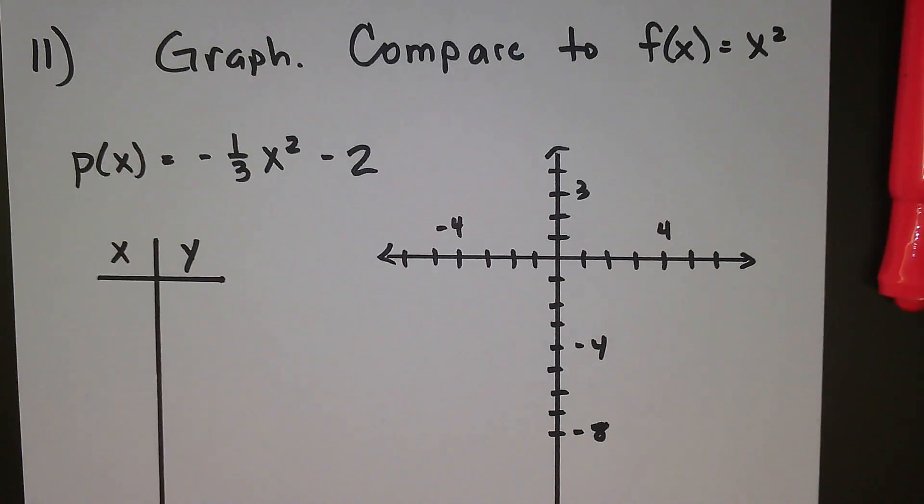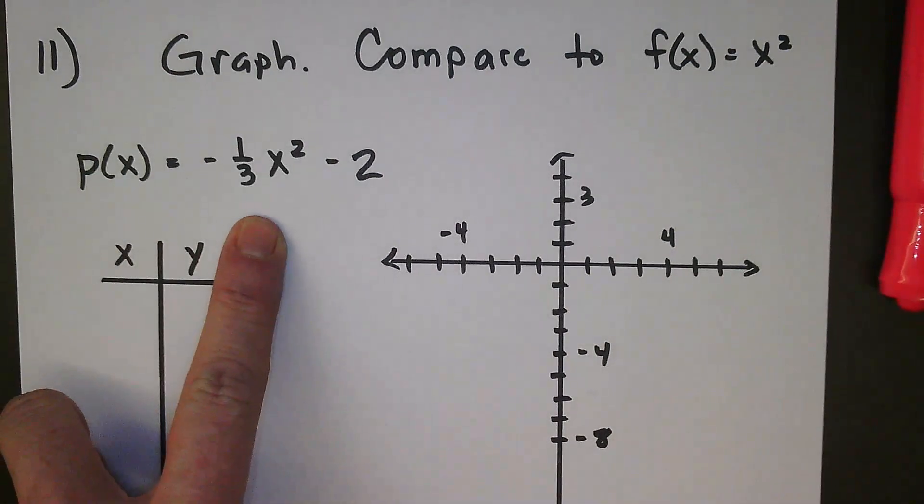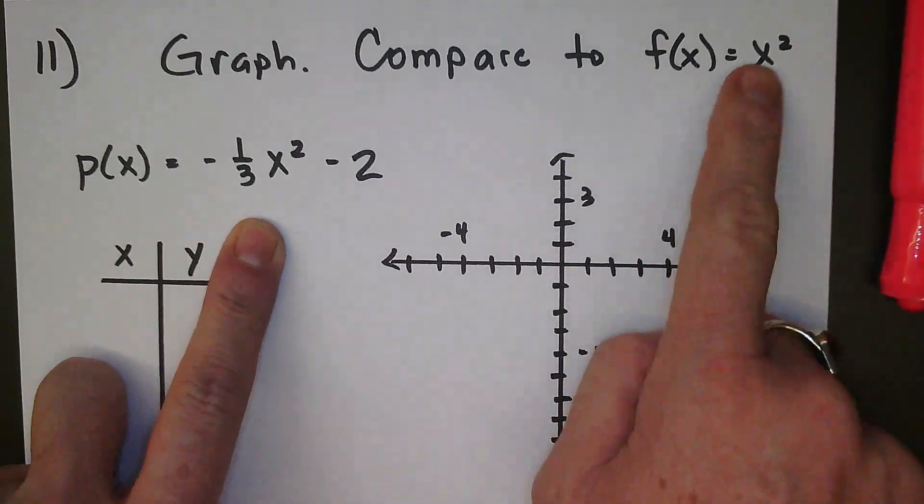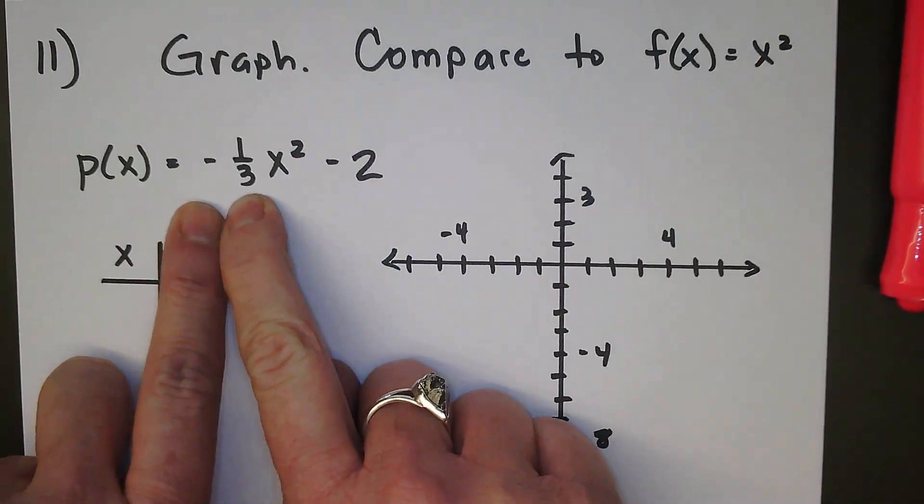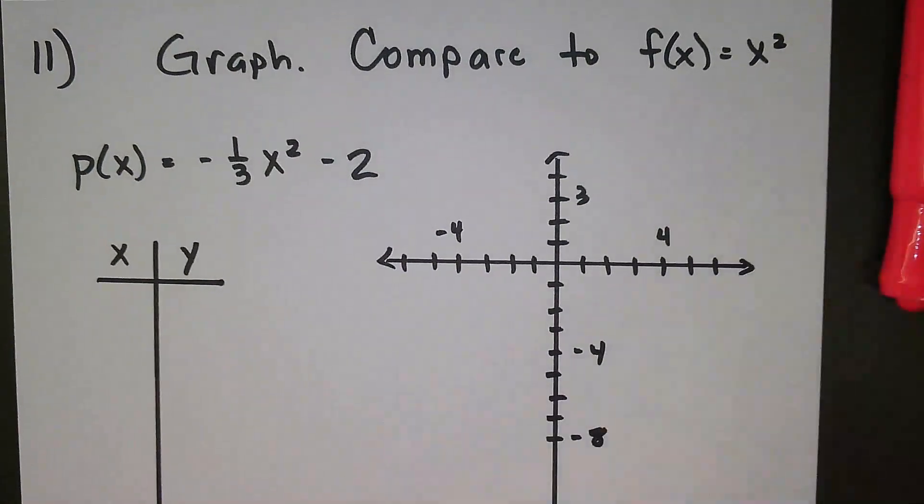Another fun one, we're graphing and comparing to our parent function f of x equals x squared. This one clearly looks quite a bit different. We've got a multiplier out front that is not one, it's negative one-thirds, and we are subtracting two at the end. So we expect this to look pretty different than our parent function.